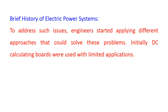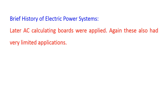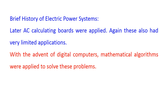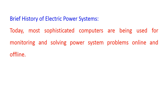To address such issues, engineers started applying different approaches to solve these problems. Initially, DC calculating boards were used, but with very limited applications. Later, AC calculating boards were applied, which also had very limited applications. In the 1950s, digital computers became available for computations. With the advent of digital computers, mathematical algorithms were applied to solve the problems associated with operation of power systems. Today, the most sophisticated computers are used for monitoring and solving power system problems both online and offline.